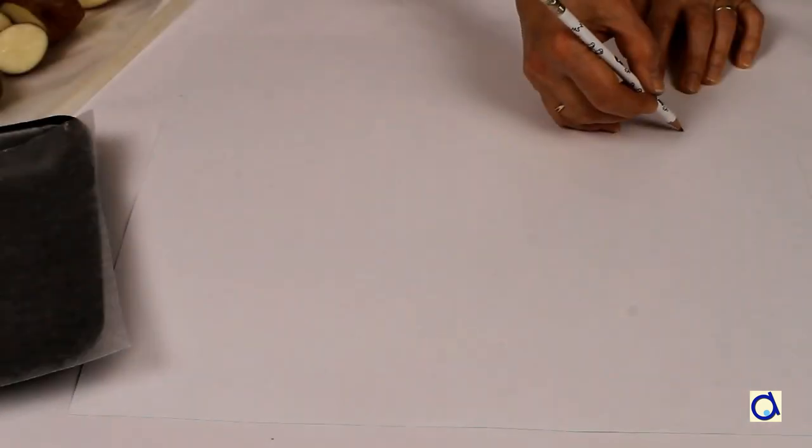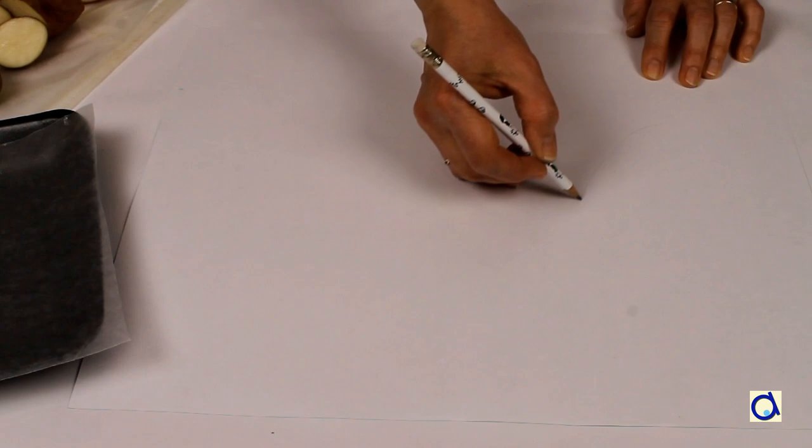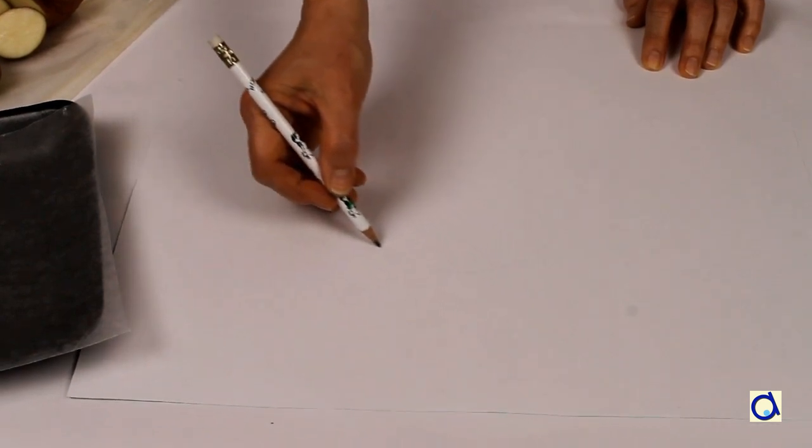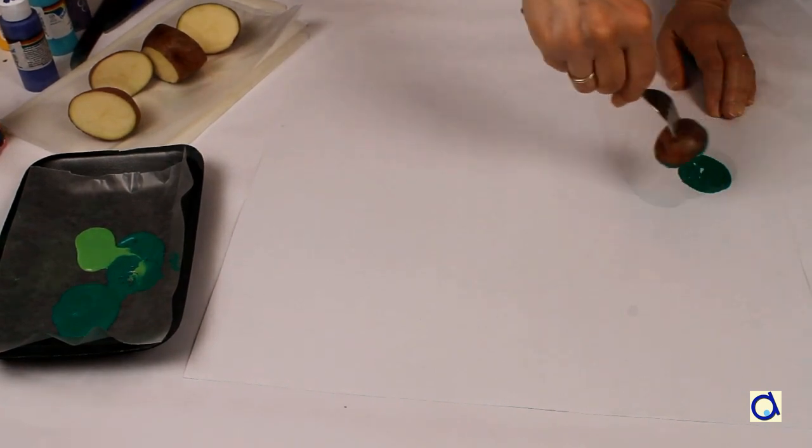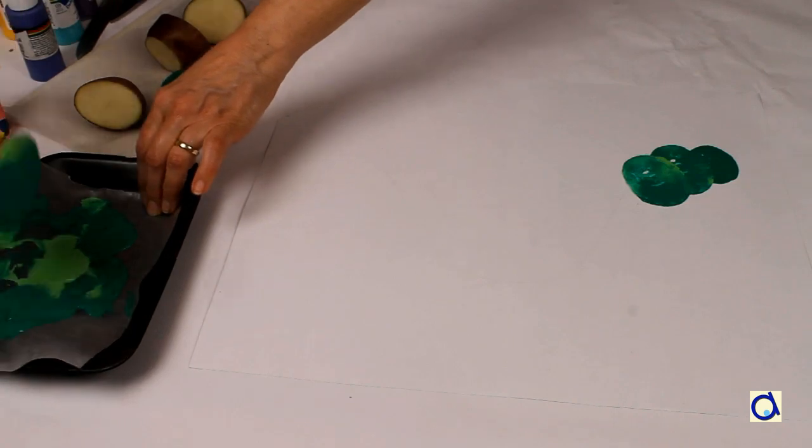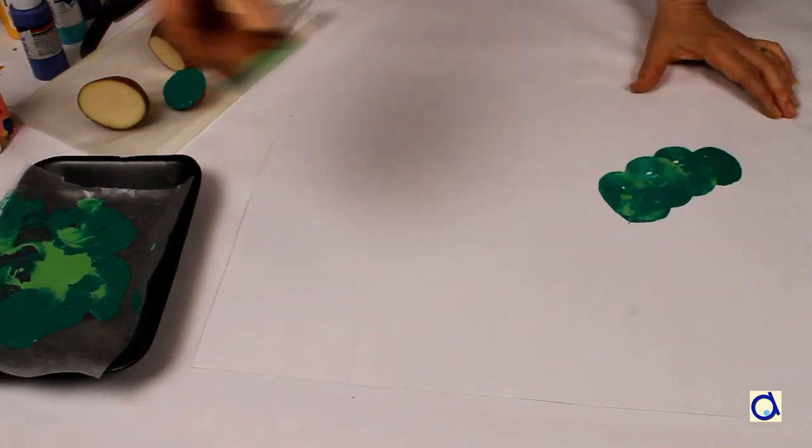Begin by drawing a thin pencil line as a guide for the general shape of the caterpillar. Dip a small potato in the green paint to print the tail part of the caterpillar. Then take a bigger potato for the rest of the body of the caterpillar.